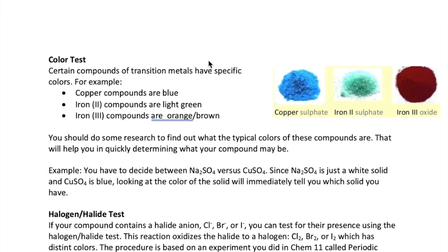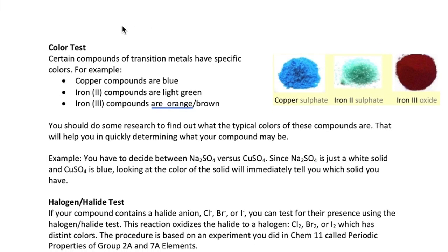A second test that you can use is to look at the color of the solid you're given. Most transition metal compounds are colorful, so here we see some examples of that. Let's say you're given a solid that could be either sodium sulfate or copper sulfate. If the solid is white, you can immediately say that it is sodium sulfate. Well, if it's blue, then it has to be copper sulfate.